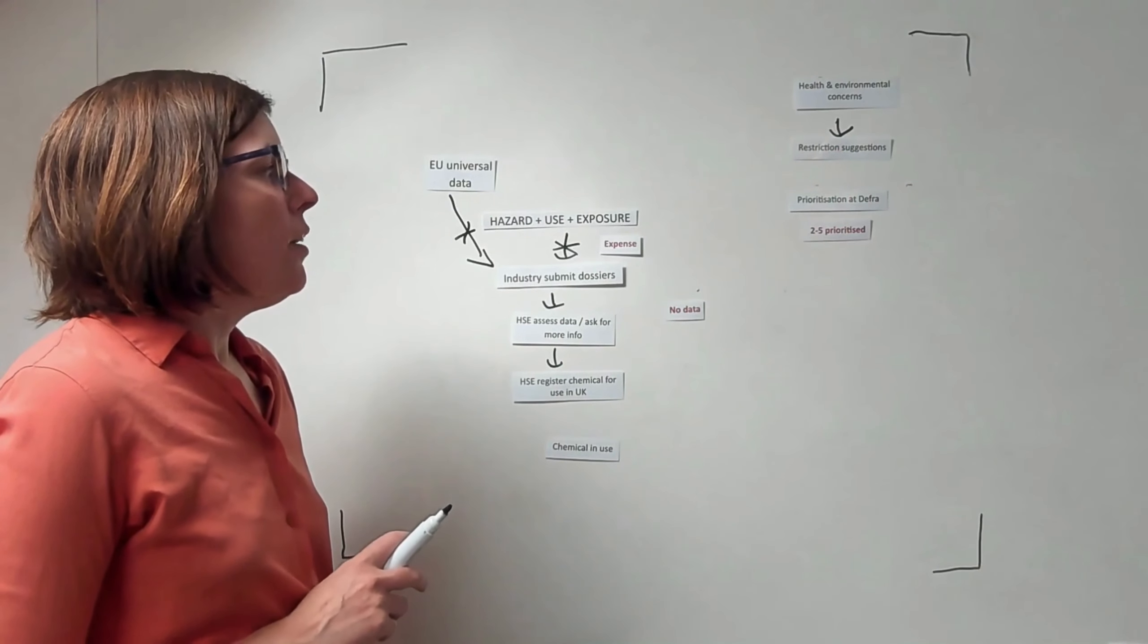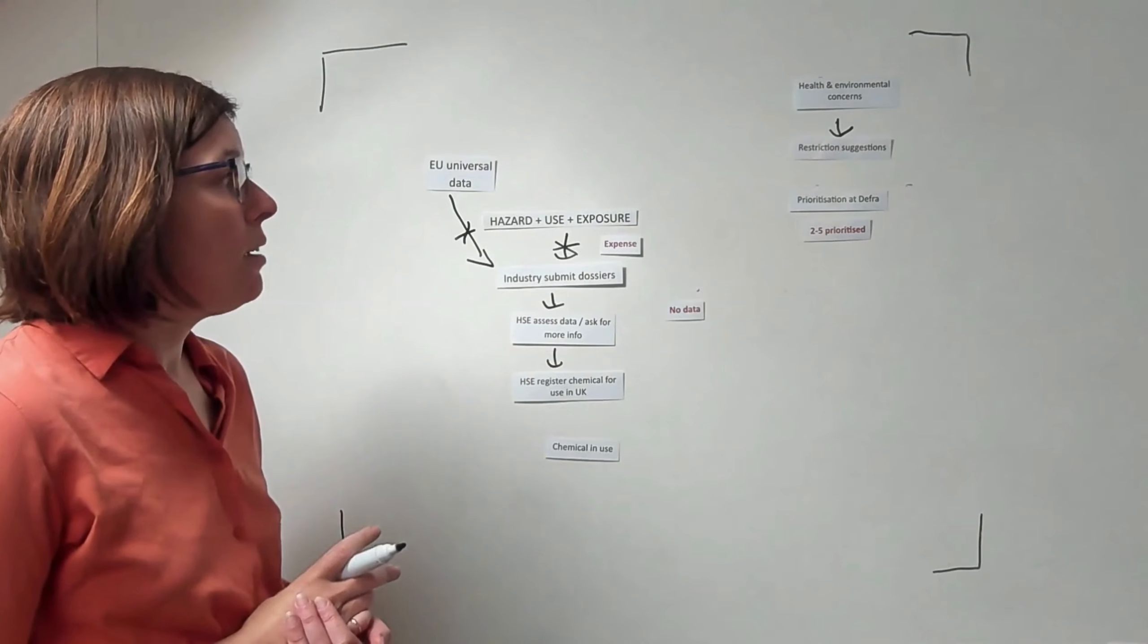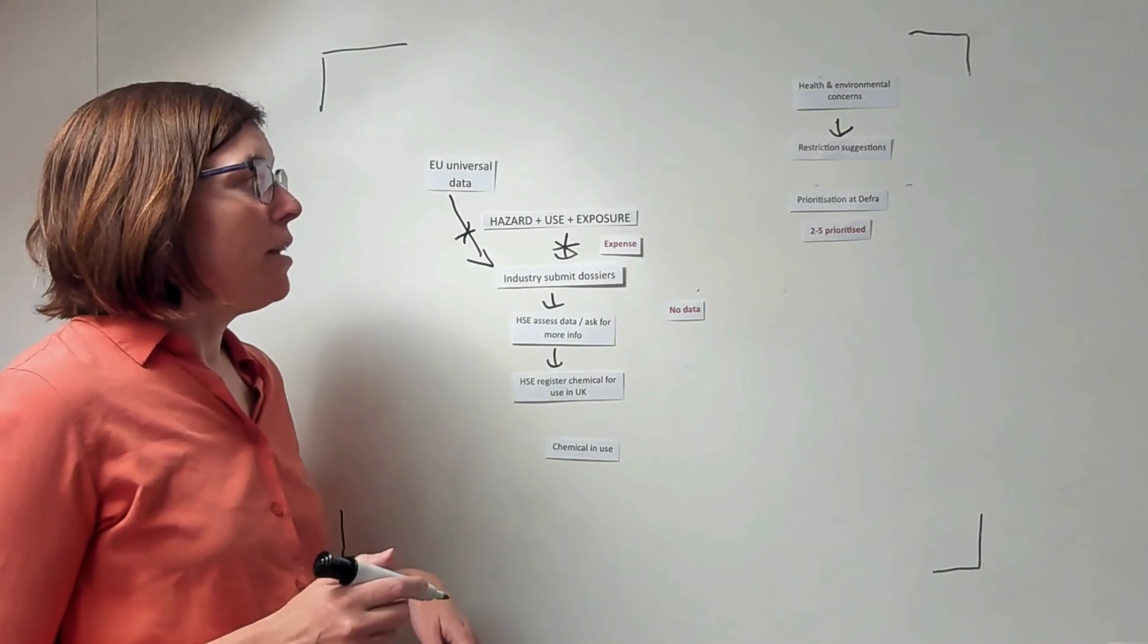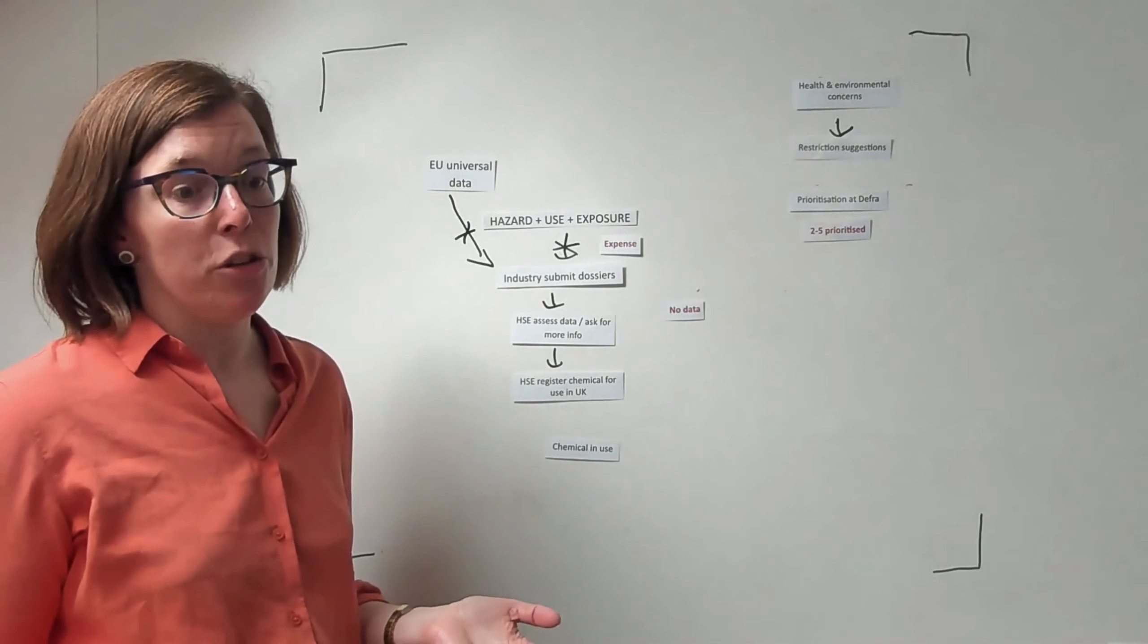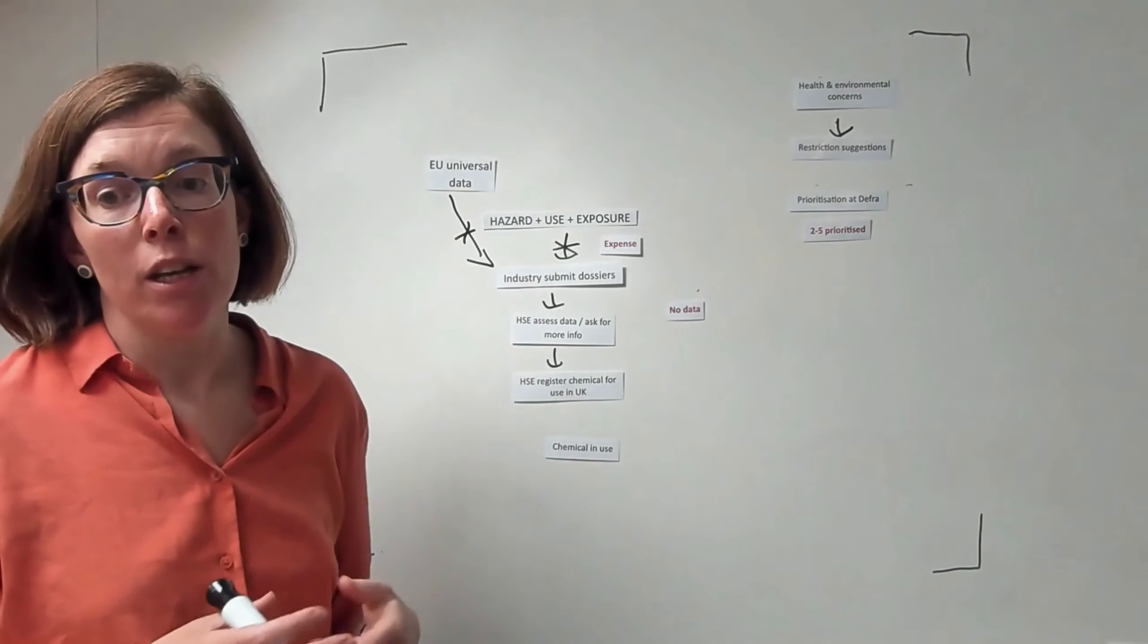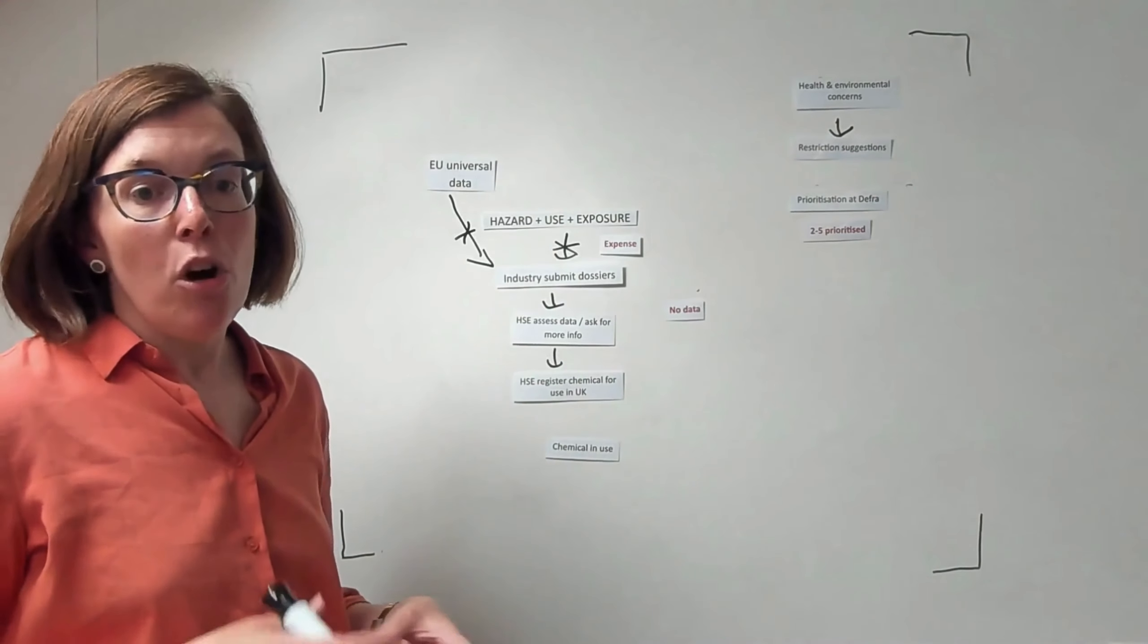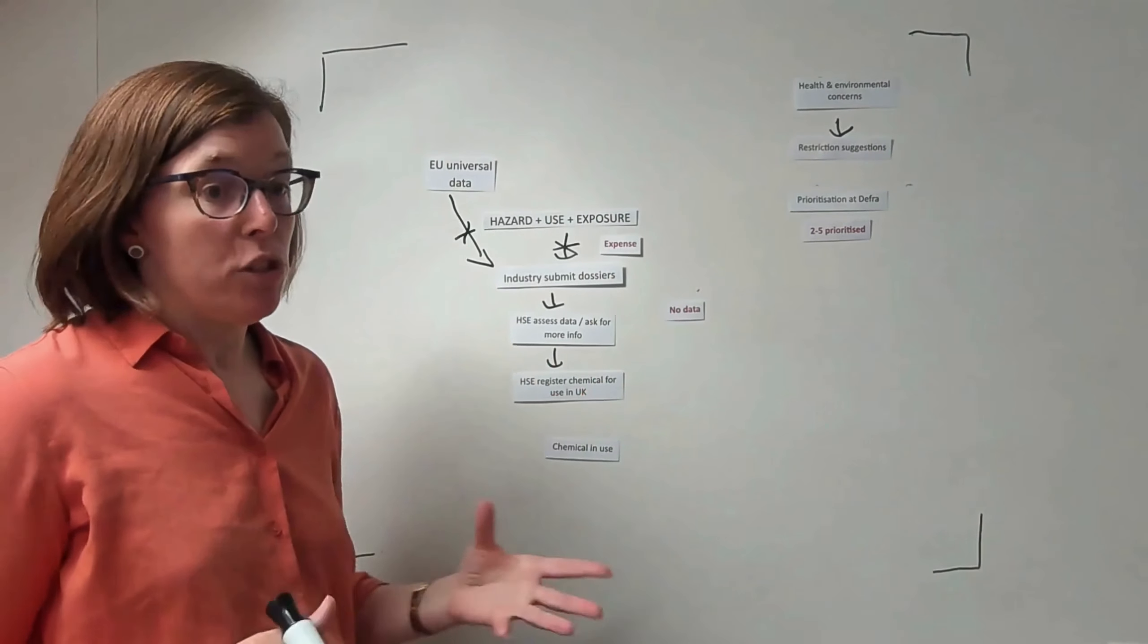But only two to five chemicals, or sometimes groups of chemicals, are being prioritized by DEFRA, and this is one of our concerns. These chemicals are potentially neurotoxic—how can you compare that against something that is toxic to reproduction? We don't think you should have to prioritize them. We need a system that is capable of looking at the breadth of chemicals that are on the market already and making decisions around whether they should be restricted, not on the basis of capacity but on the basis of the need to restrict them and to stop the harm coming to people and wildlife.